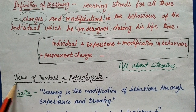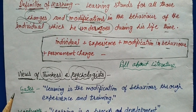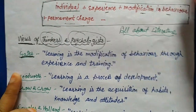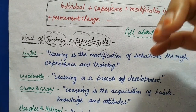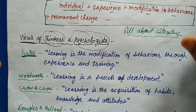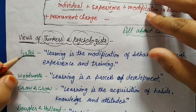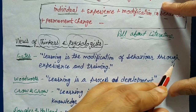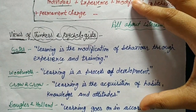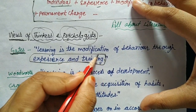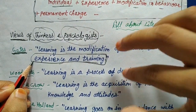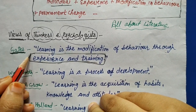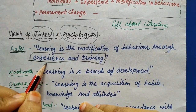Here we will take the views of thinkers and psychologists, which are most important from your exam point of view. They may ask direct questions about whose definition is which. First, Gates says: 'Learning is the modification of behavior through experience and training.' The key hint here is experience and training. This is a simple and most reliable definition of learning.